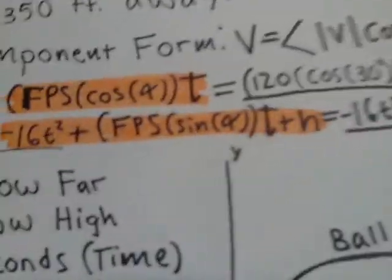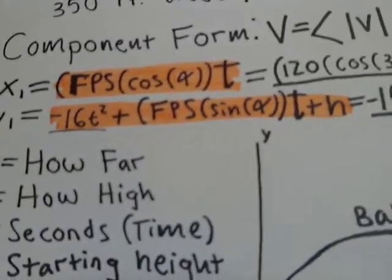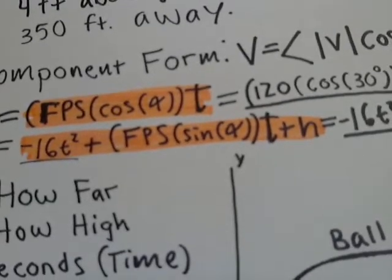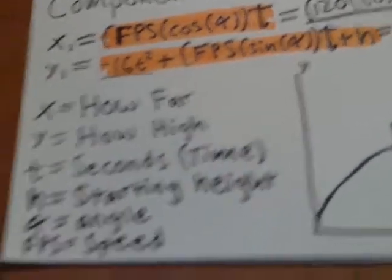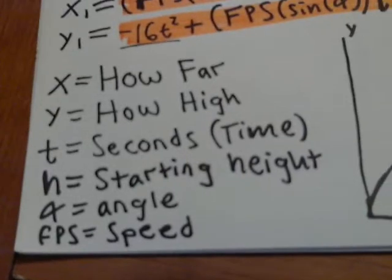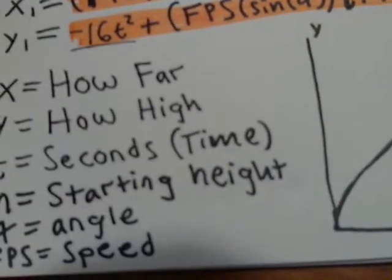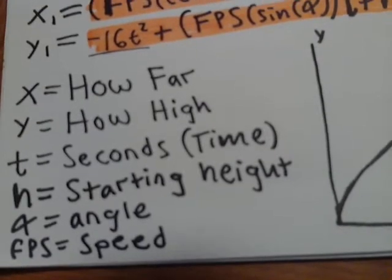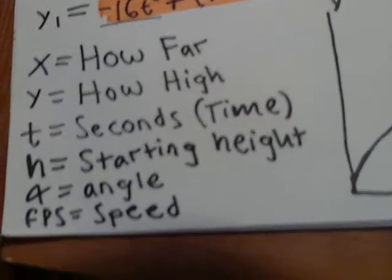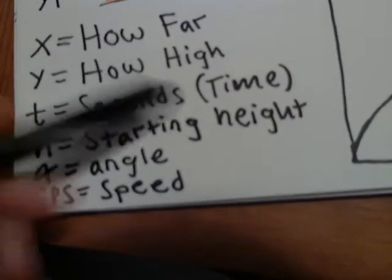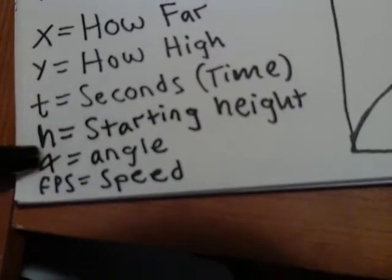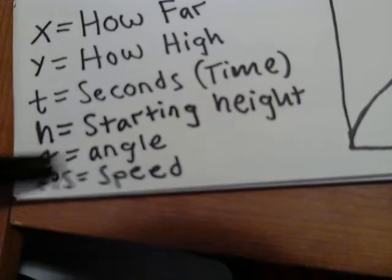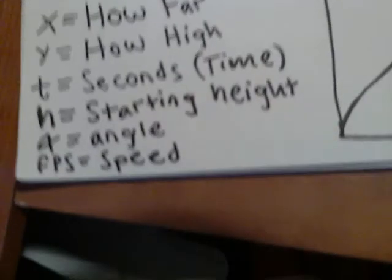So there's those equations again. Off here to the side we have x for how far the ball went, y for how high, and t for seconds or time, and h for starting height. There's theta for angle and fps for speed, which is feet per second.